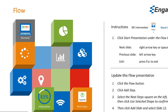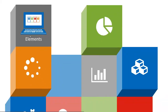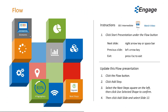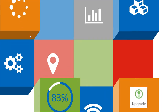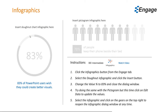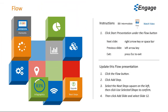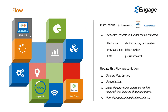Let's click the right arrow — we're going to zoom into this Elements section, then reveal the Elements slide. Clicking the right arrow again, we go back to the canvas slide, and clicking once more, we zoom into the Infographics section and reveal the Infographics slide. To escape out of this Flow presentation, you can click the Escape button.